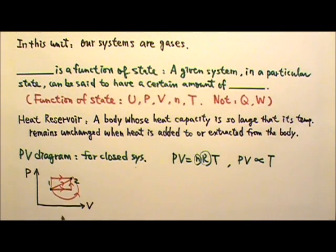As long as the changes are made slowly enough, so the gas is always in equilibrium, we can plot the state changes on the PV diagram and we can see the paths of the processes.